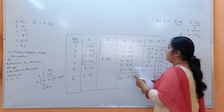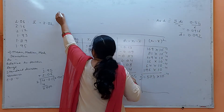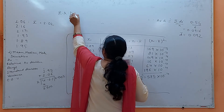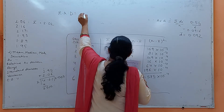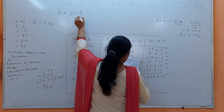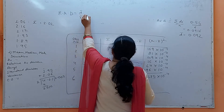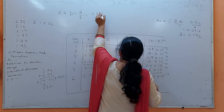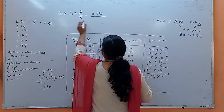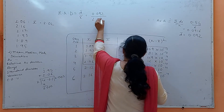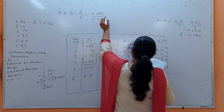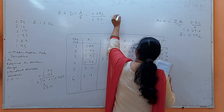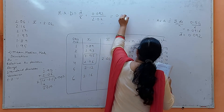Now for relative average deviation, the formula is d-bar divided by x-bar. So that is 0.092 divided by 2.02, which comes out to be 0.0455.